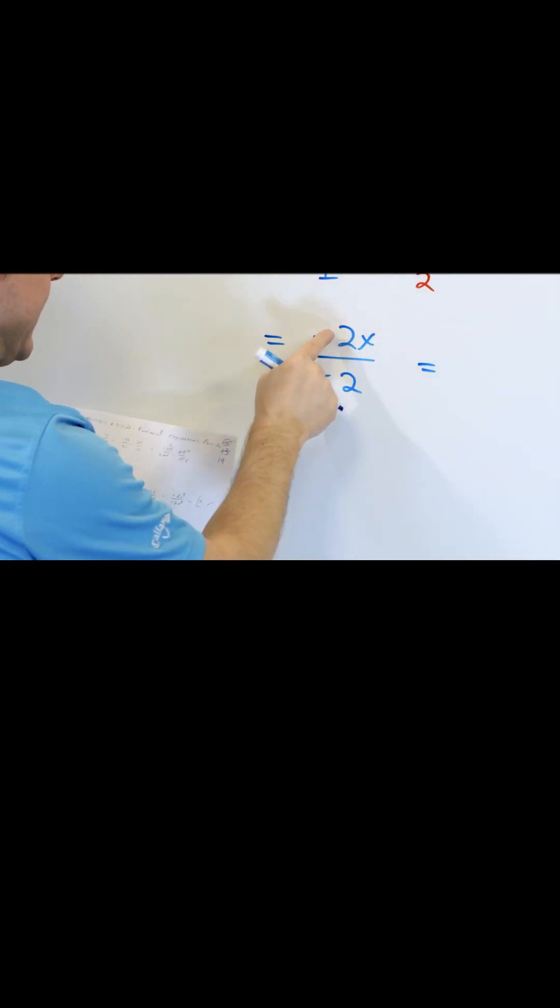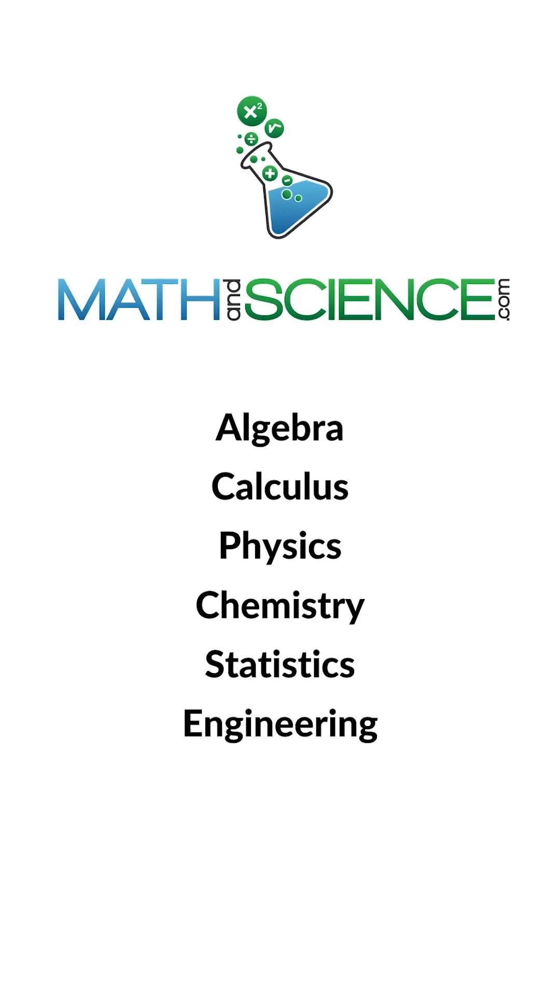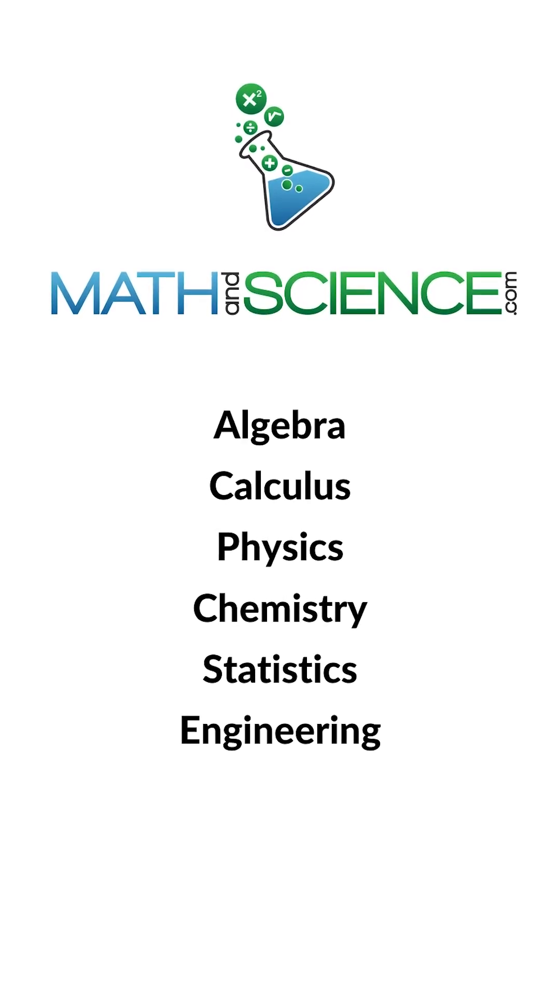And then when I simplify this, the negative 2 can cancel with the negative 2. So I'm just going to have x as the final answer, and that is the final answer. Learn anything at mathandscience.com